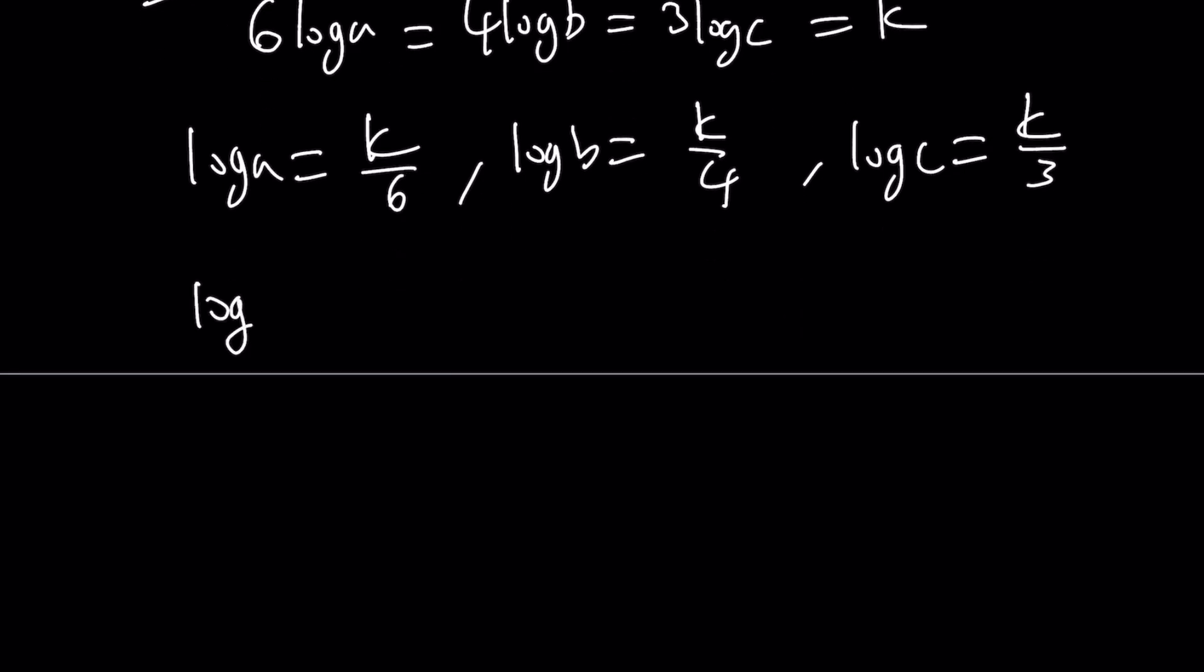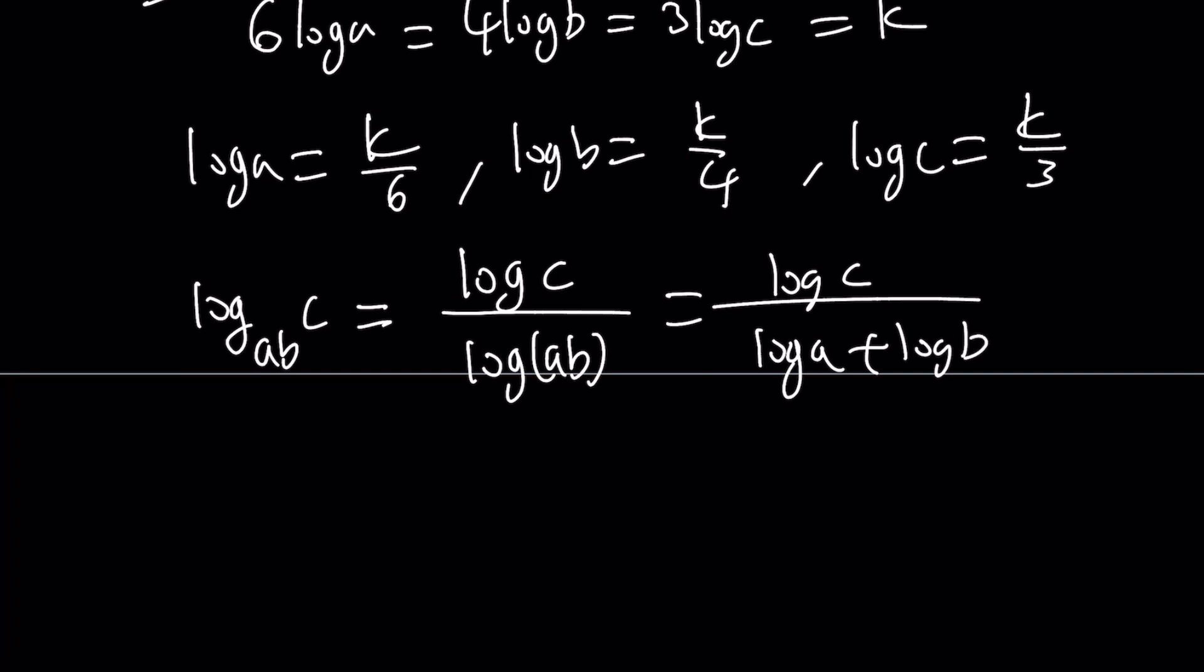Now, to make things easier on ourselves, of course the first method is a little bit more painful. We're going to use change of base formula. We can now turn this into base 10. So write this as log C over log AB. And then, of course, log AB can be broken down into log A plus log B. Now, we can go ahead and do the replacements.